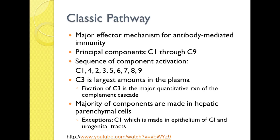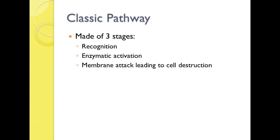We're going to go through the classical pathway first, then the alternative, then the mannose binding lectin. The major effector mechanism for antibody-mediated immunity is the classical pathway. We have components C1 through C9, but they are not in numerical order — it goes C1, then 4, 2, 3, 5, 6, 7, 8, 9. C3 is present in the largest amount in the plasma and is the major quantitative reaction of the complement cascade. The majority of complement components are made in the hepatic parenchymal cells in the liver. There are three stages: recognition, enzyme activation, and membrane attack leading to cell destruction.